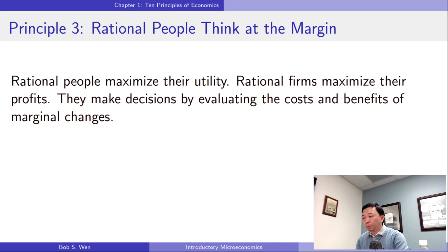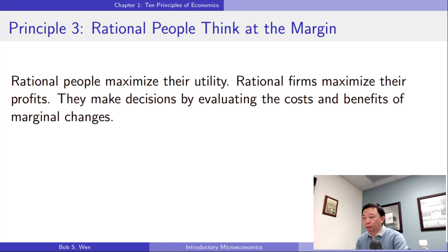How do rational people make decisions? Rational people make decisions by comparing marginal costs and marginal benefits. Margin means the edge, like the edge of a table. The marginal change is a small incremental change around the edges of what we are doing. A rational decision maker takes action if and only if the marginal benefit of the action is greater than the marginal cost.